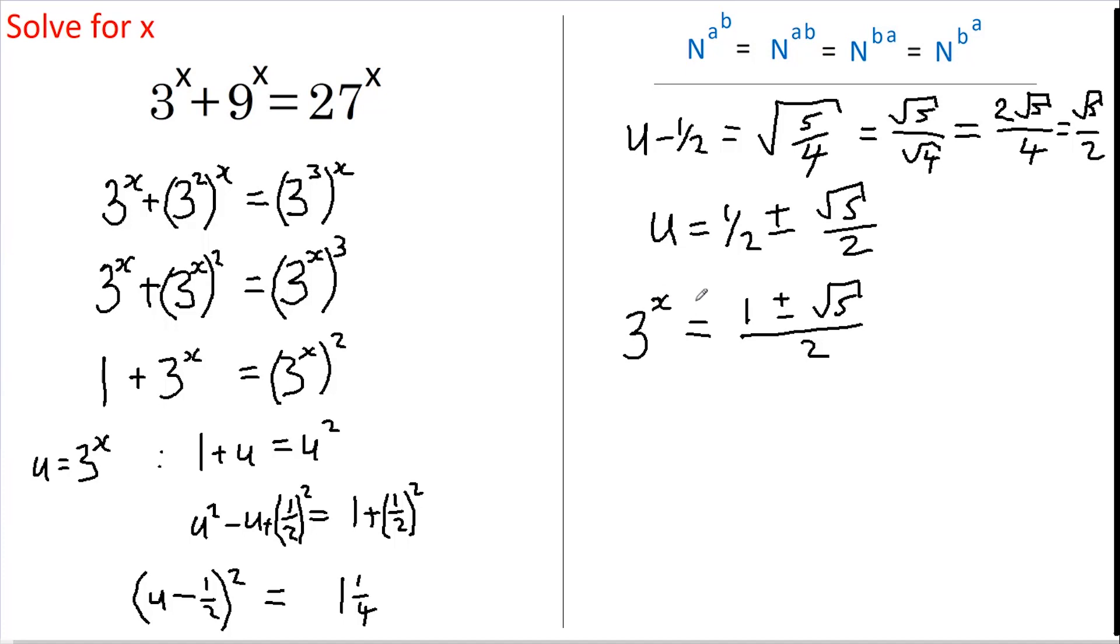Now I'm going to take the log of both sides, so this becomes log of 3 to the power of x. I can choose any base I like, so I'm going to choose base 3 because it makes life easy, and I'm going to move this x down to the front. This now gives us x times log base 3 of 3 equals 1.